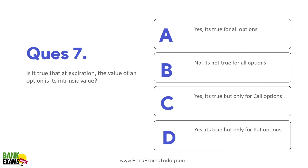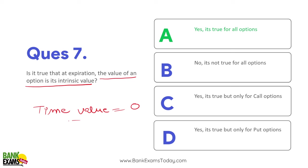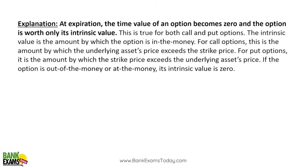Question 7: Is it true that at expiration, the value of an option is its intrinsic value? That is true. At expiration, the value of an option is its intrinsic value — time value goes to zero, because the contract has expired and there is no time value left.